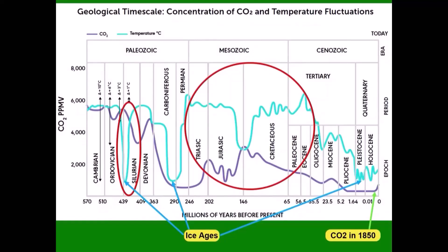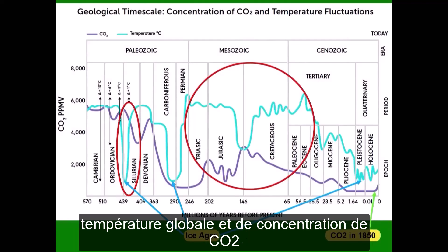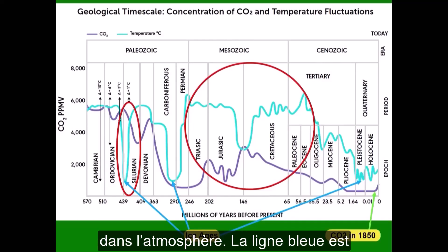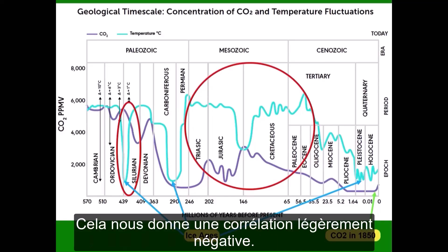This is a half billion years and more of global temperature and CO2 concentration in the atmosphere. The blue line is temperature, the purple line is CO2. This gives you a slightly negative correlation.